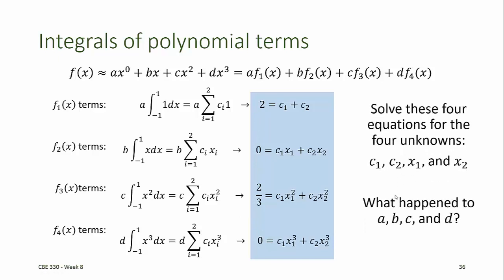Now we can solve these four equations for our four unknowns. The two unknown weights, c1 and c2, and the two unknown locations in the domain at which the function is evaluated, x1 and x2.